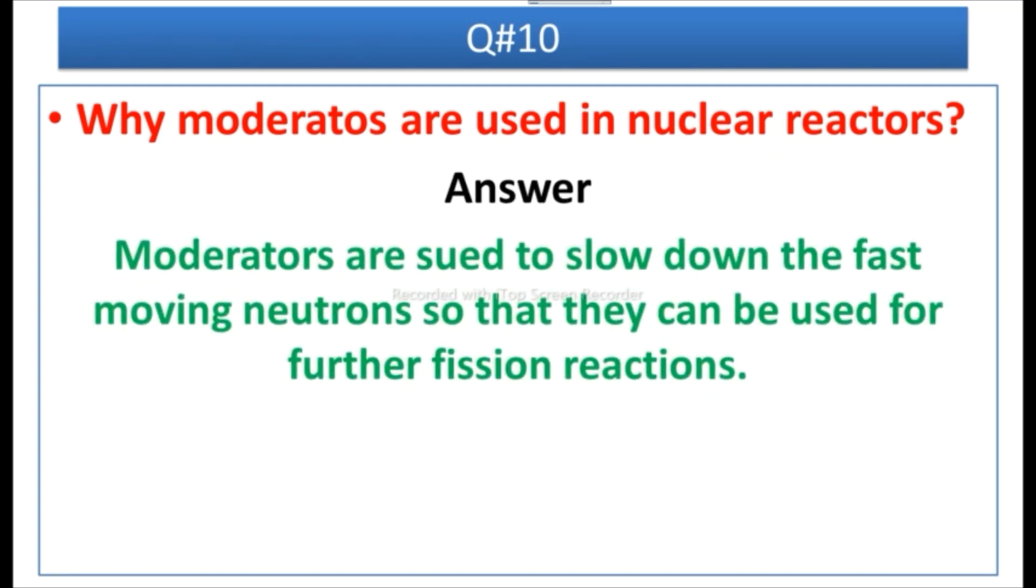Answer: Moderators are used to slow down the fast moving neutrons so that they can be used for further fission reaction.